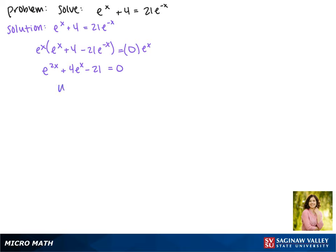Now we can make the substitution u equals e to the x. Plugging this in gives us u squared plus 4u minus 21 equals 0. The factors of negative 21 that make positive 4 are positive 7 and negative 3.